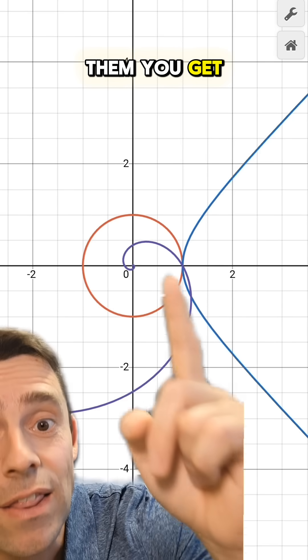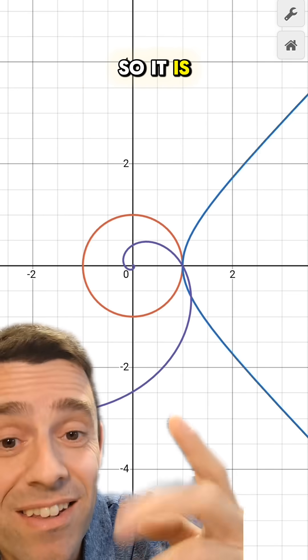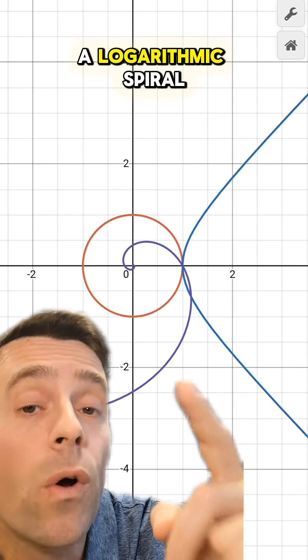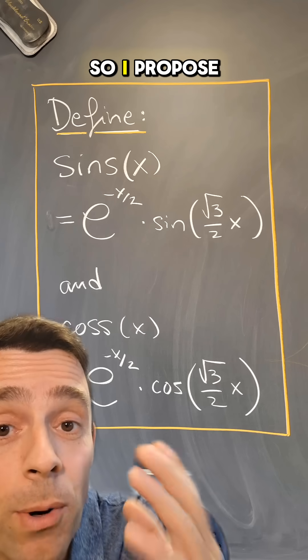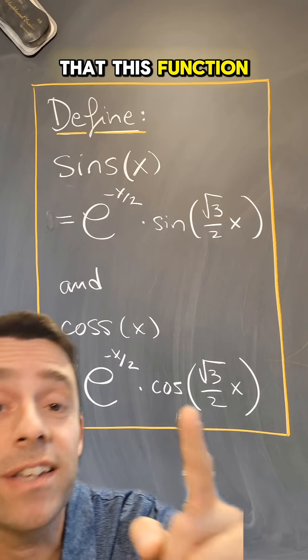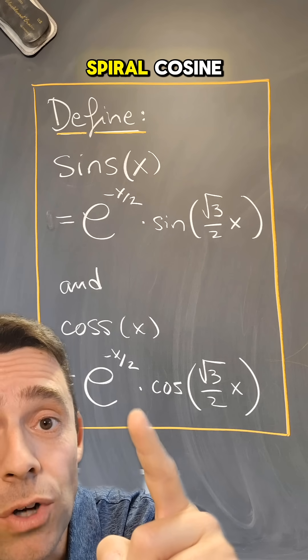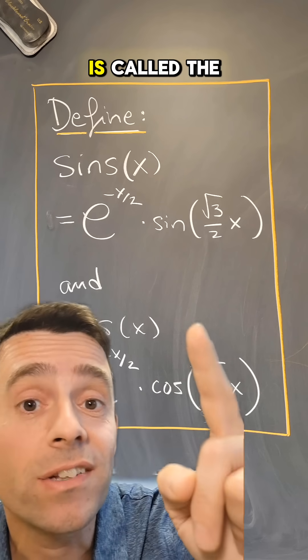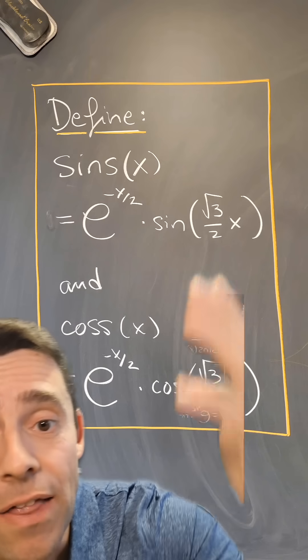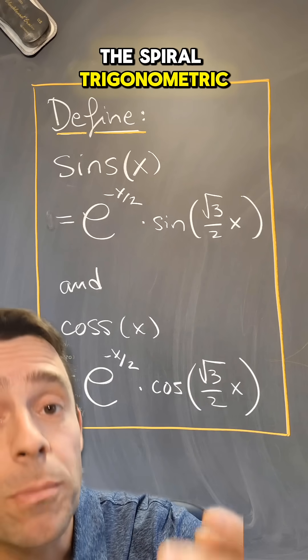When you plot them, you get this shape. So it is a spiral, and it's in fact a logarithmic spiral. So I propose that this function is called the spiral cosine, and that function is called the spiral sine, and these are the spiral trigonometric functions.